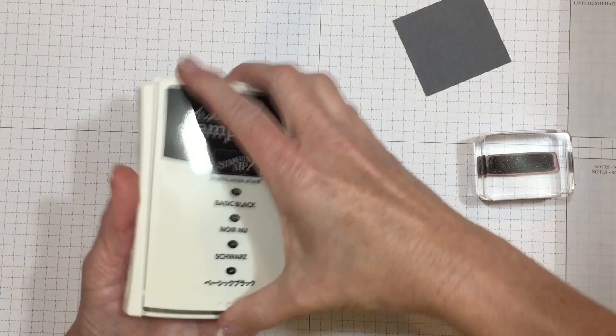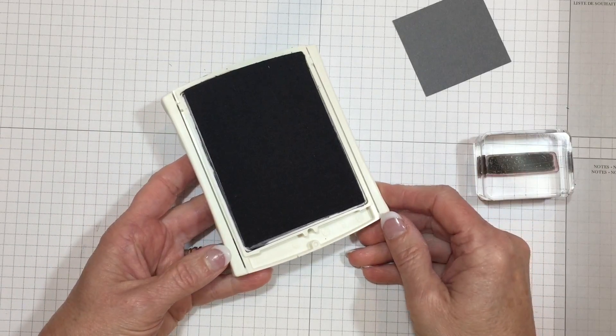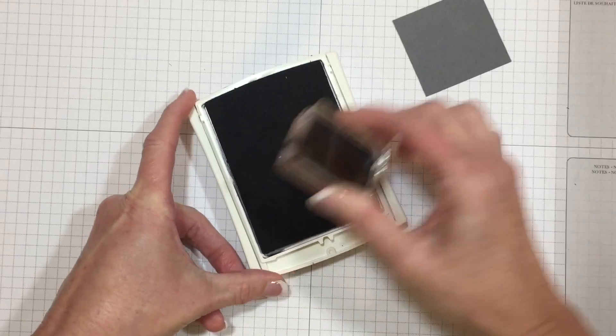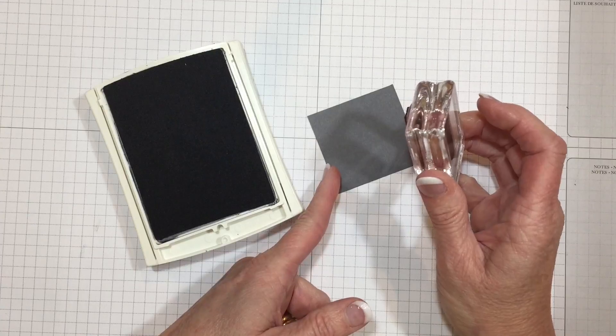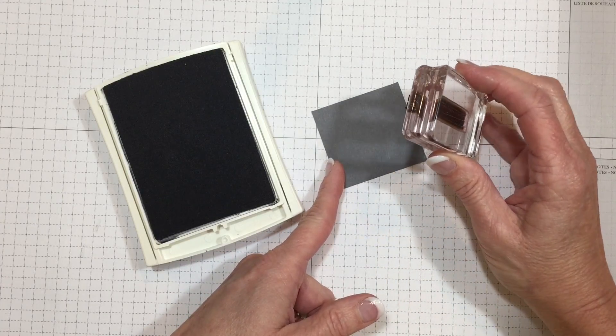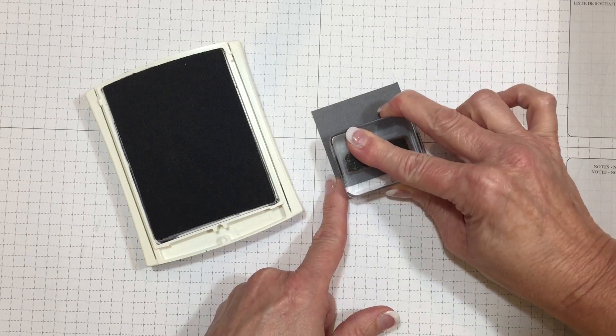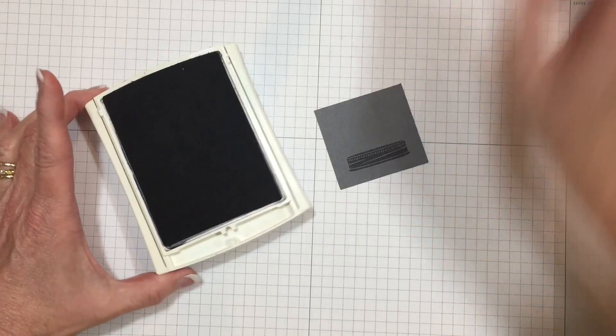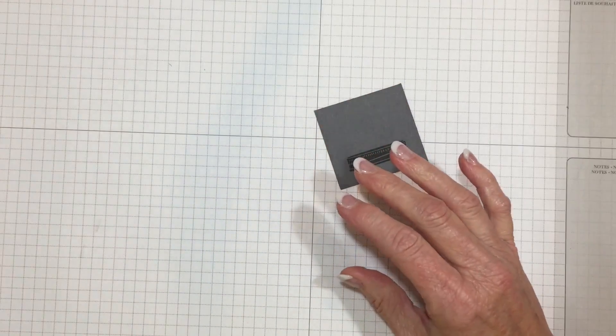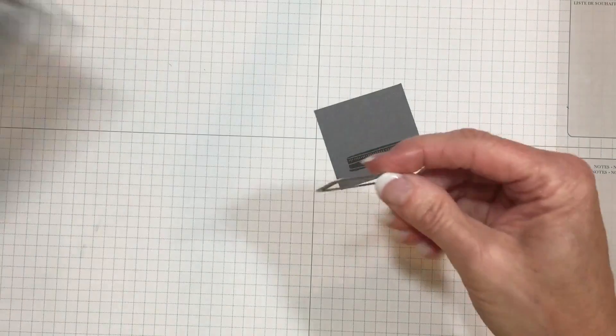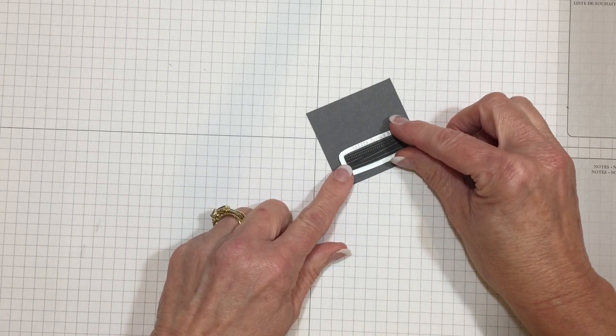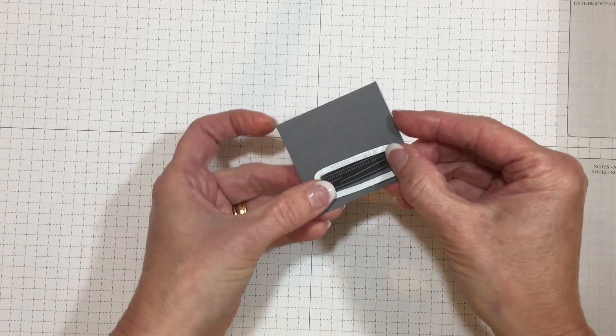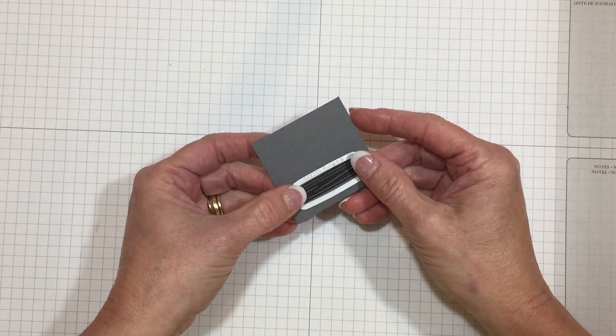We're going to create a jar lid for the top of the jar tag. I'm using archival black ink because we're going to use some gold shimmer with the Wink of Stella brush. If we use black Memento ink, the water-based ink, the Wink of Stella would make those inks smear, so you want to use your black archival ink. Depending on how many tags you make is how many lids you're going to need. We're going to use this framelit to cut out the jar lid. Take your magnetic platform and cutting pad, add another cutting pad, and you're ready to roll it through the Big Shot.